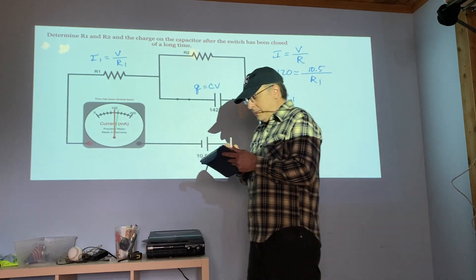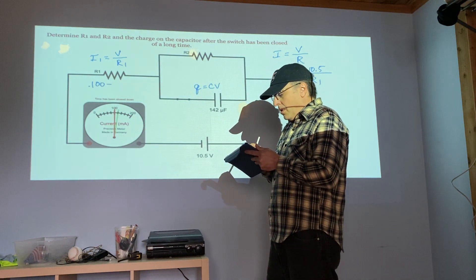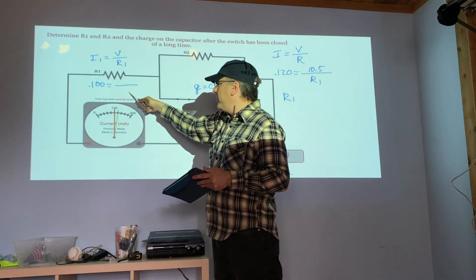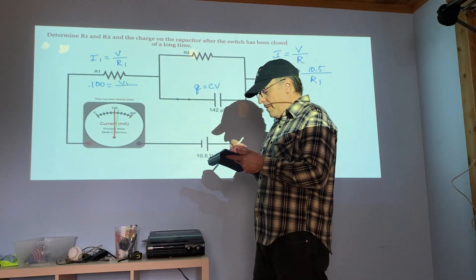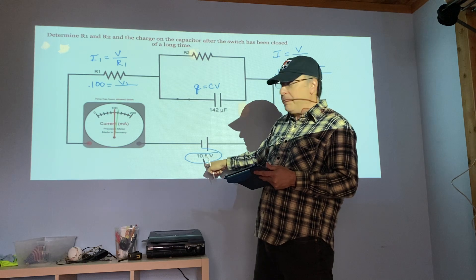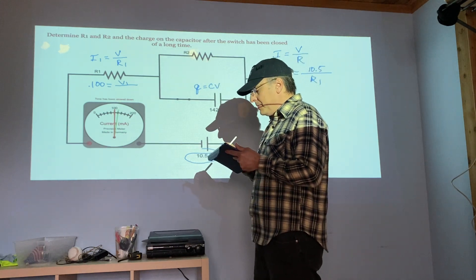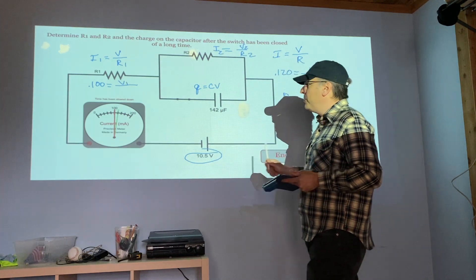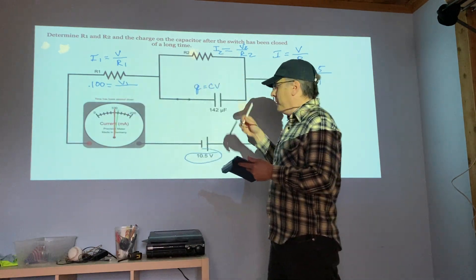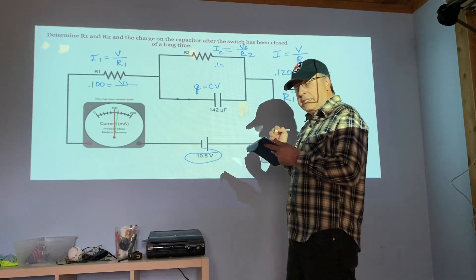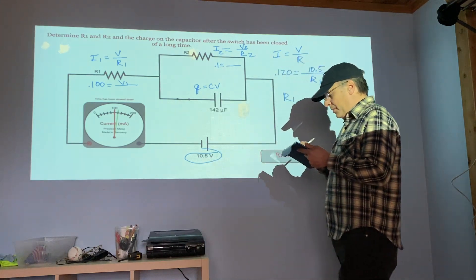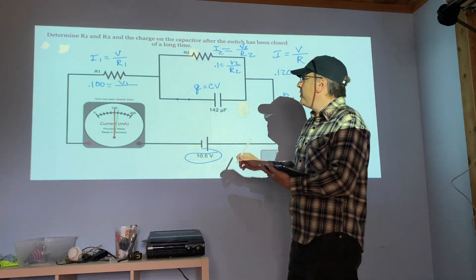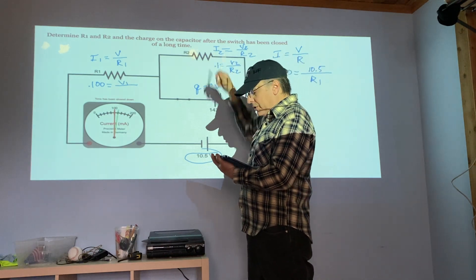We plug it in as I1. We do R1 based on what we found when it was first shorted out, and we solve for V1. V1 better be less than 10.5. We do the same thing here: I equals V over R. This time we're doing I2, V2, and R2. We use the same I, the steady state once the capacitor is charged, we plug in our R2 value and we solve for V2.